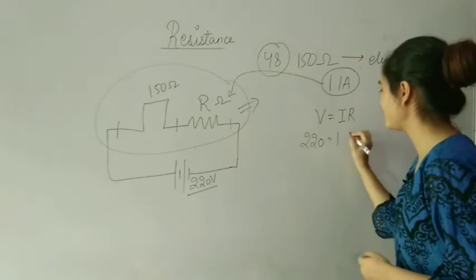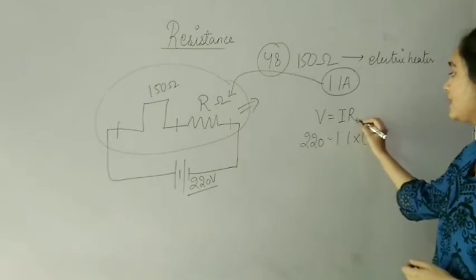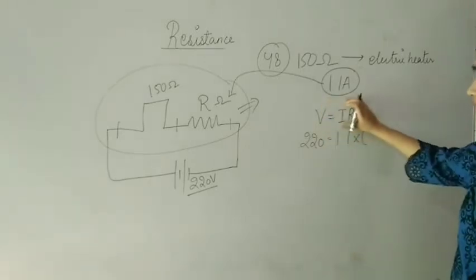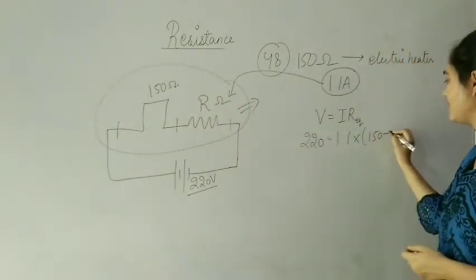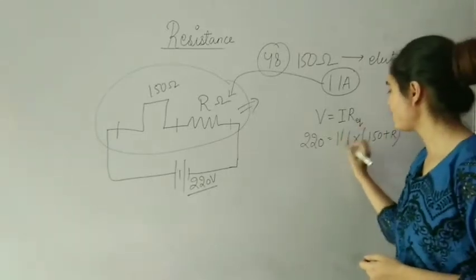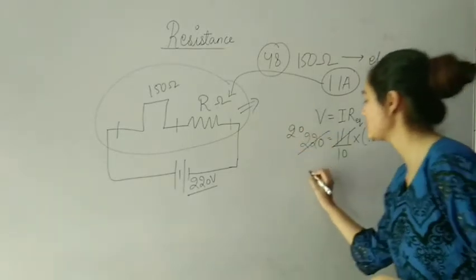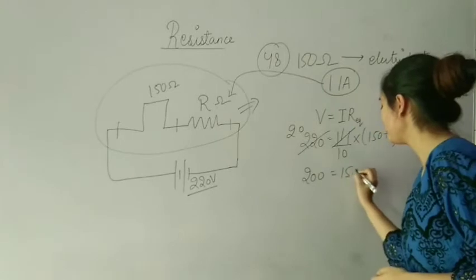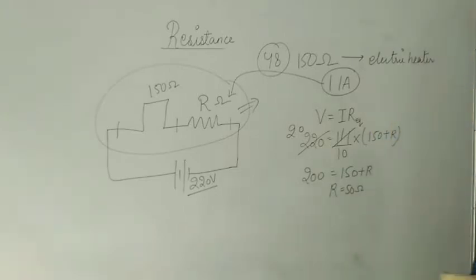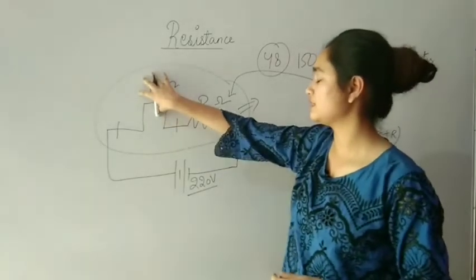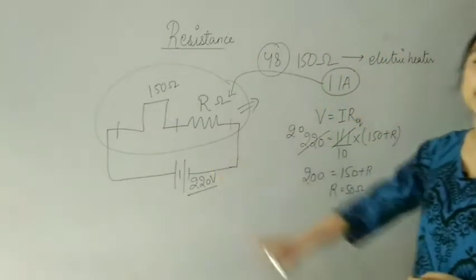Maximum current is 1.1 ampere, and equal current flows: 1.1 ampere into the total resistance which is 150 plus R. So 220 equals 1.1 times (150 plus R). Solving: 200 equals 150 plus R, giving R equals 50 ohm. The maximum resistance is 50 ohm, and with 150 ohm the heater can be connected to the 220 volt main supply.